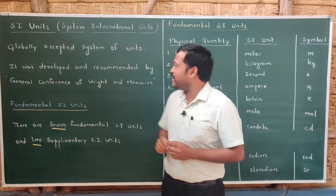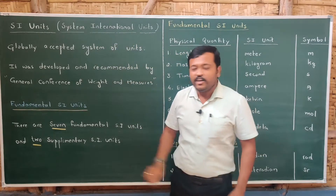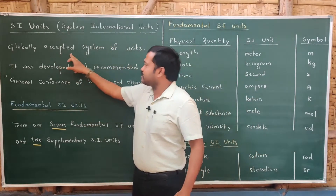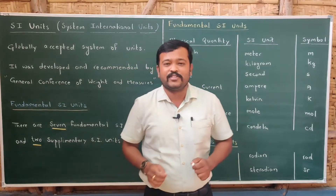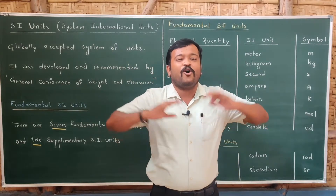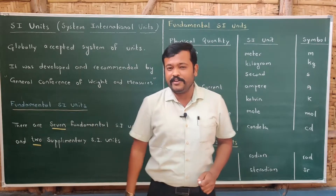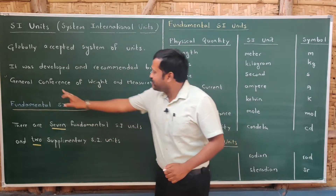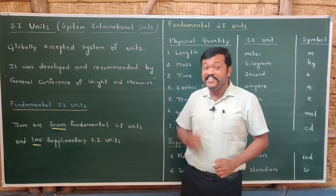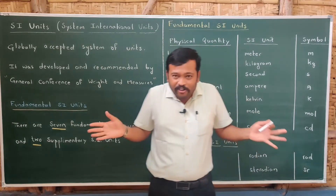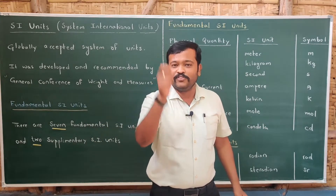SI units — that is, Système International units — is a globally accepted system of units, accepted by all countries throughout the world. It was developed and recommended by the General Conference of Weights and Measures, in which all scientists came up with a single system of units.